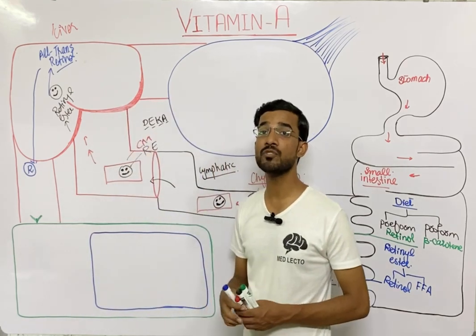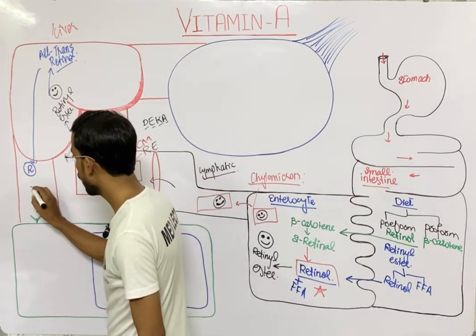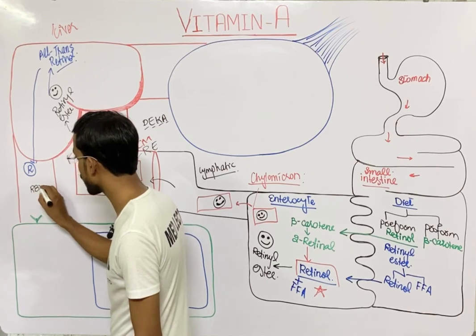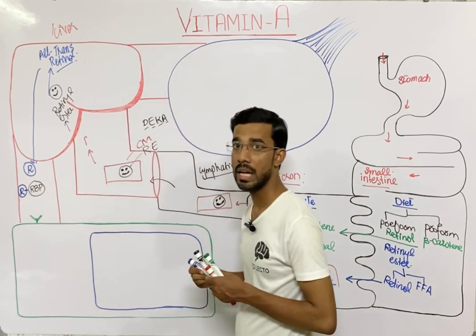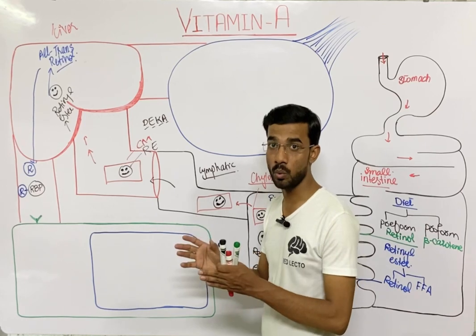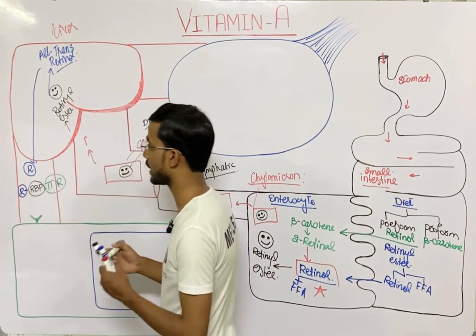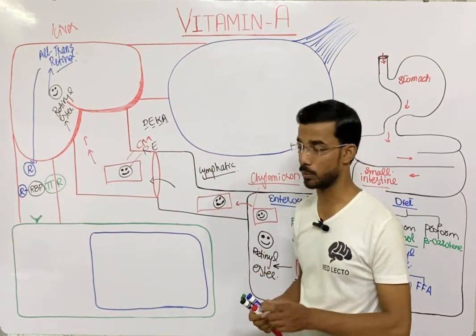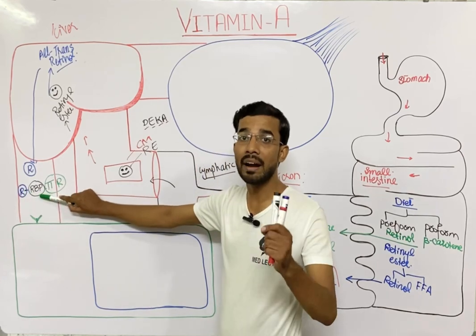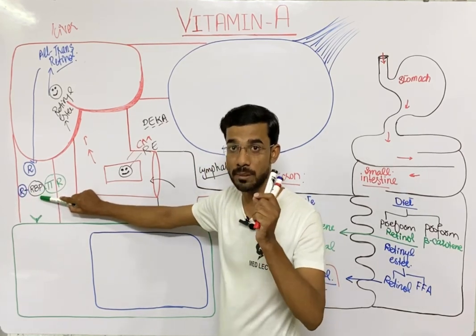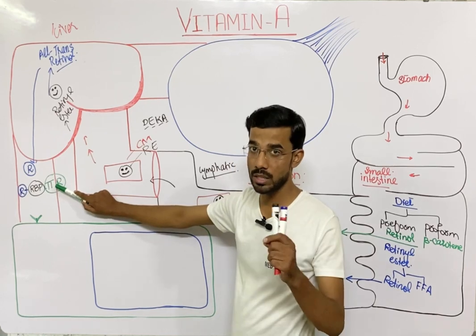In the bloodstream, retinol binds to retinol binding protein (RBP). Along with these two, there is also attachment of transthyretin. So we have a complex of three molecules: retinol, retinol binding protein, and transthyretin, which move toward the tissues of the body.